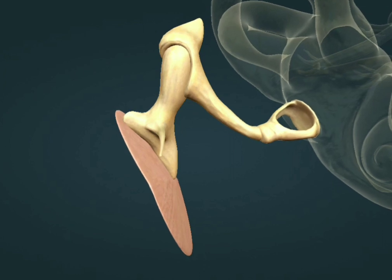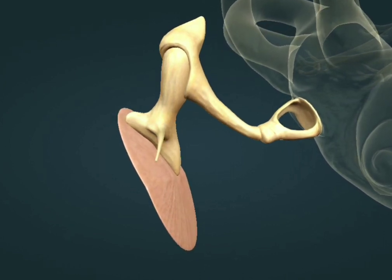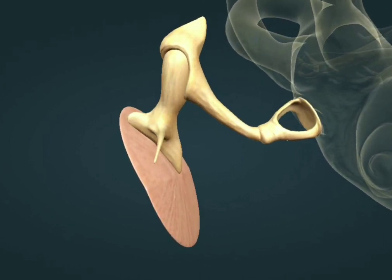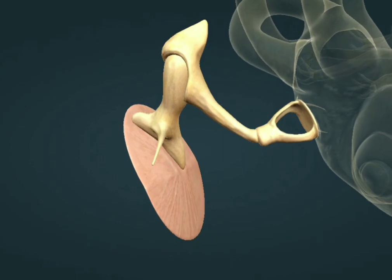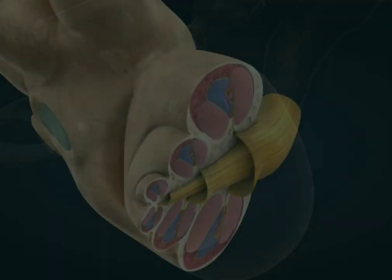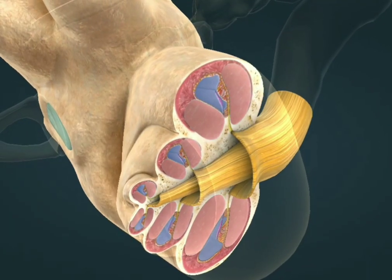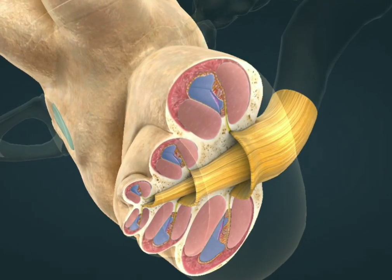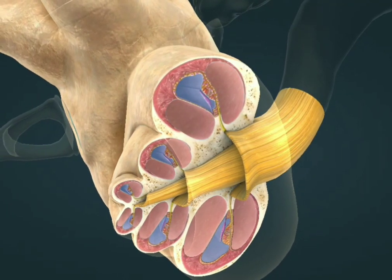The vibration of the eardrum is transmitted to the cochlea by the ossicles: the hammer, the anvil, and the stirrup. The base of the stirrup fits snugly into the oval window of the cochlea.